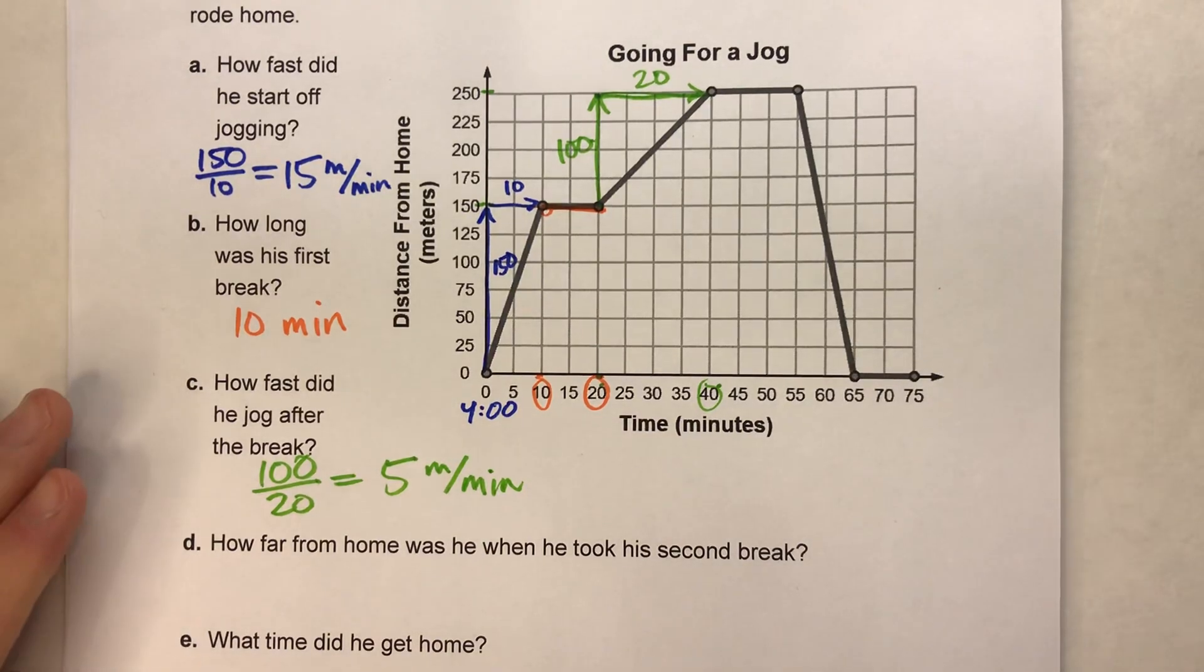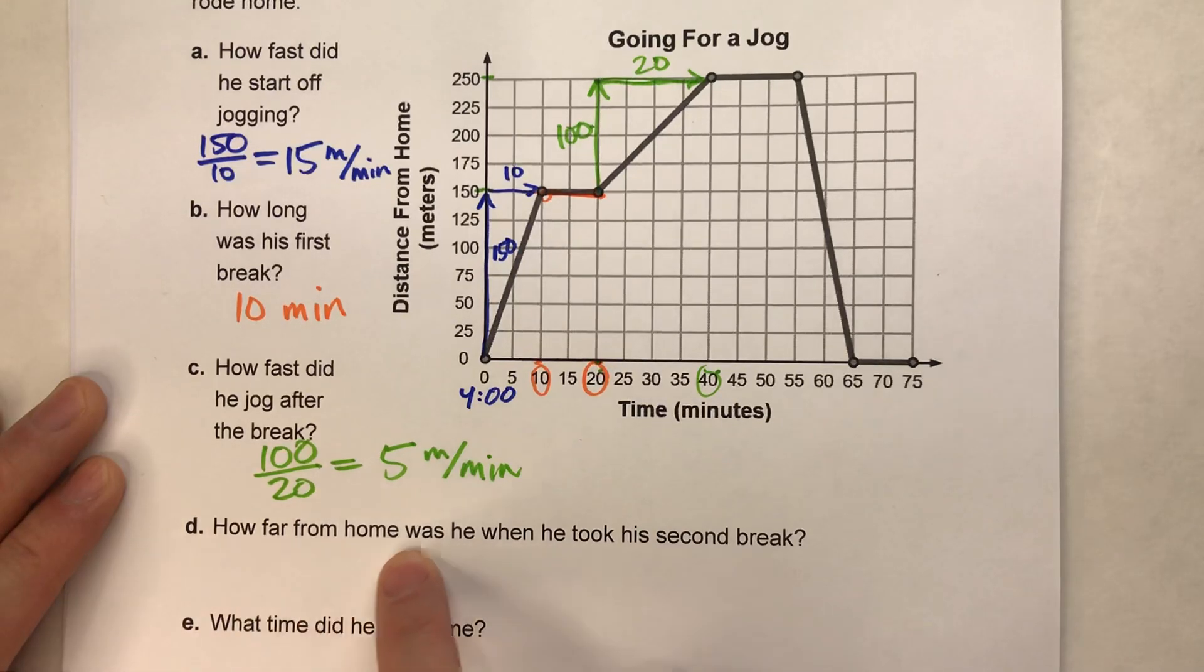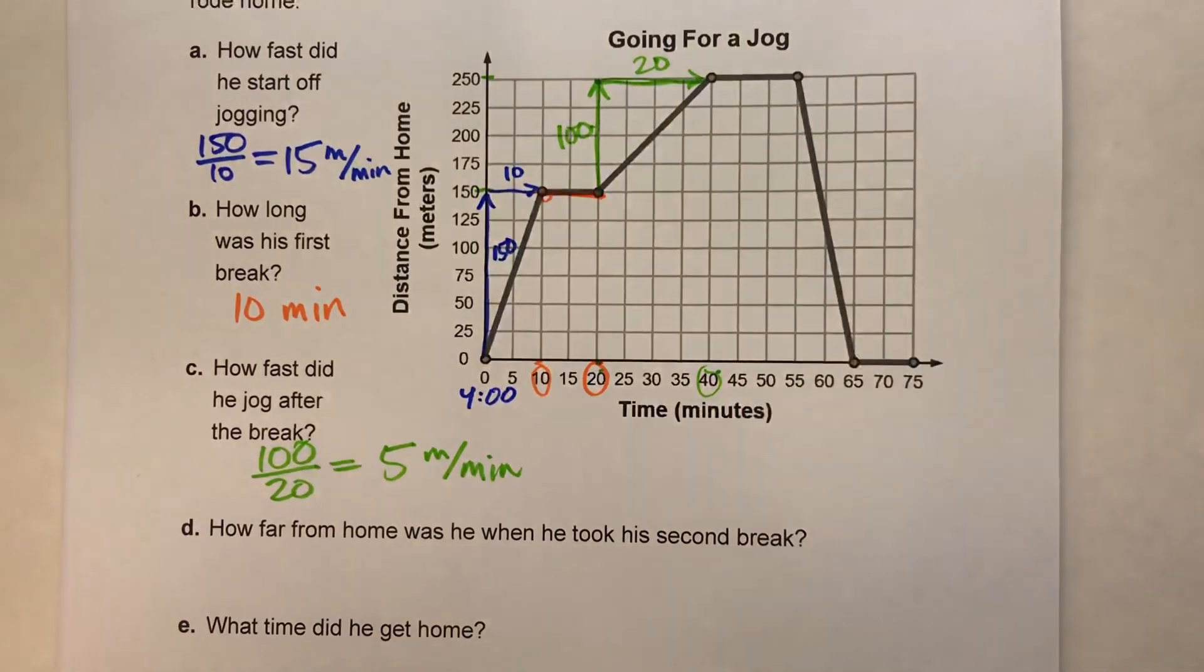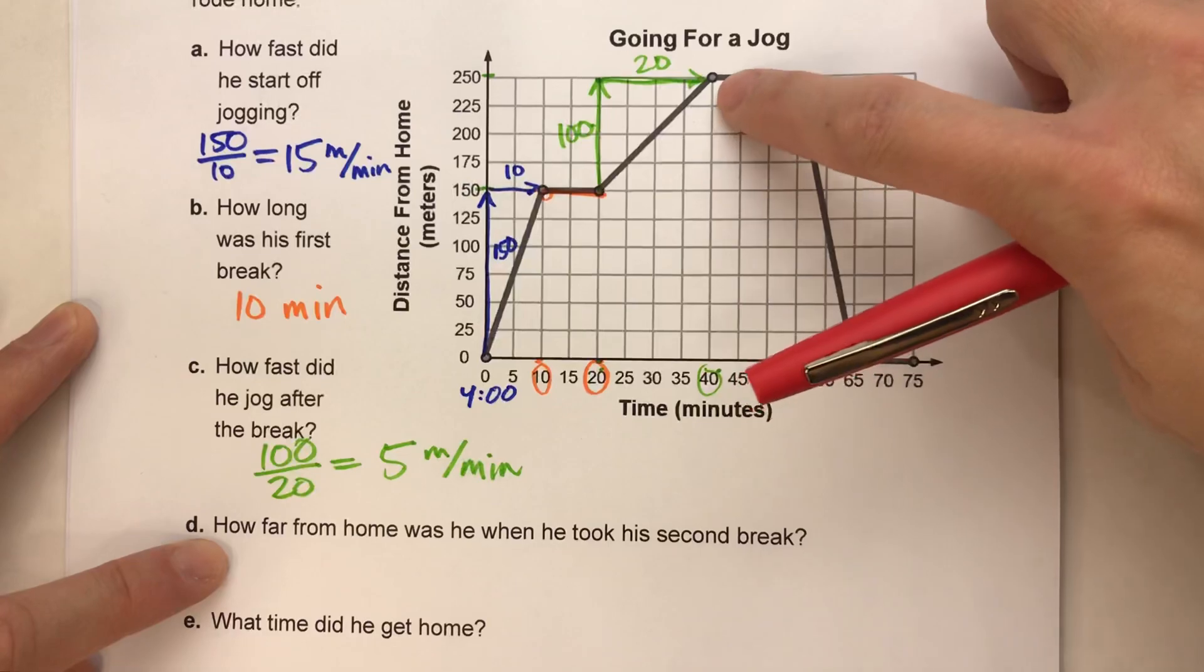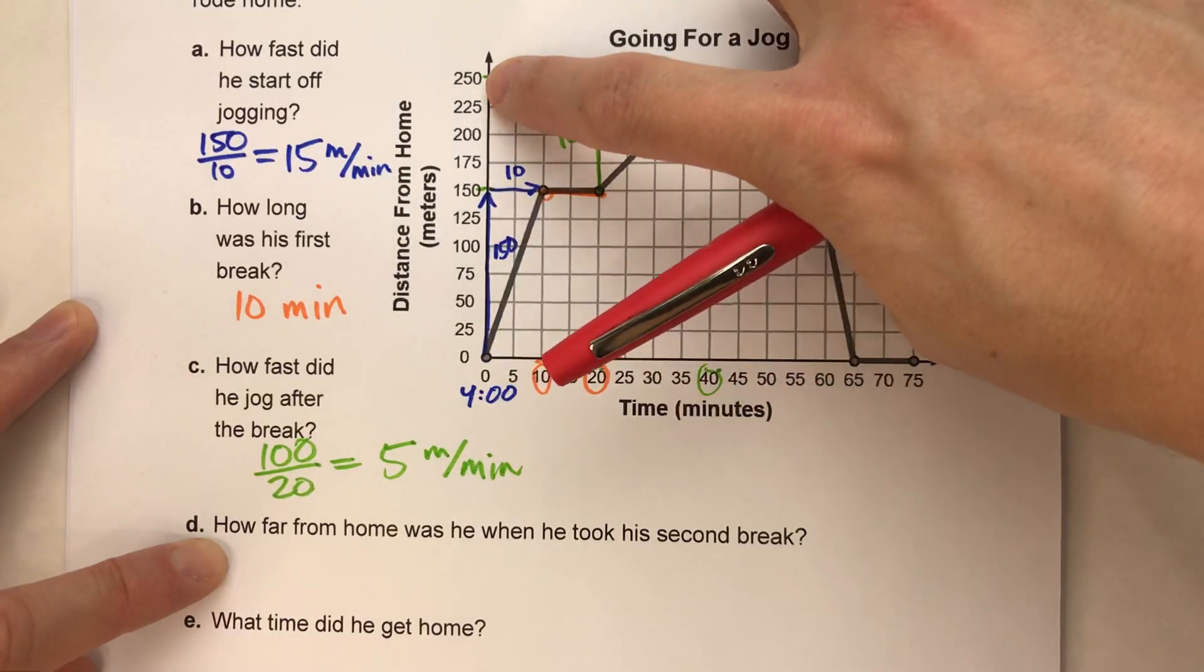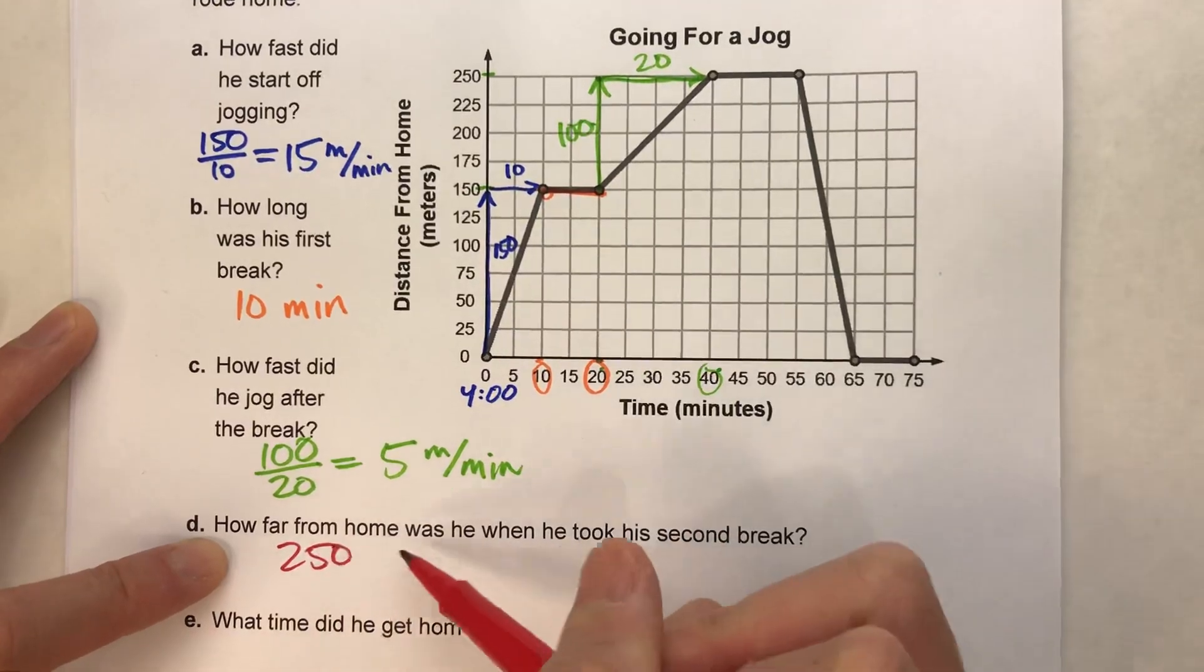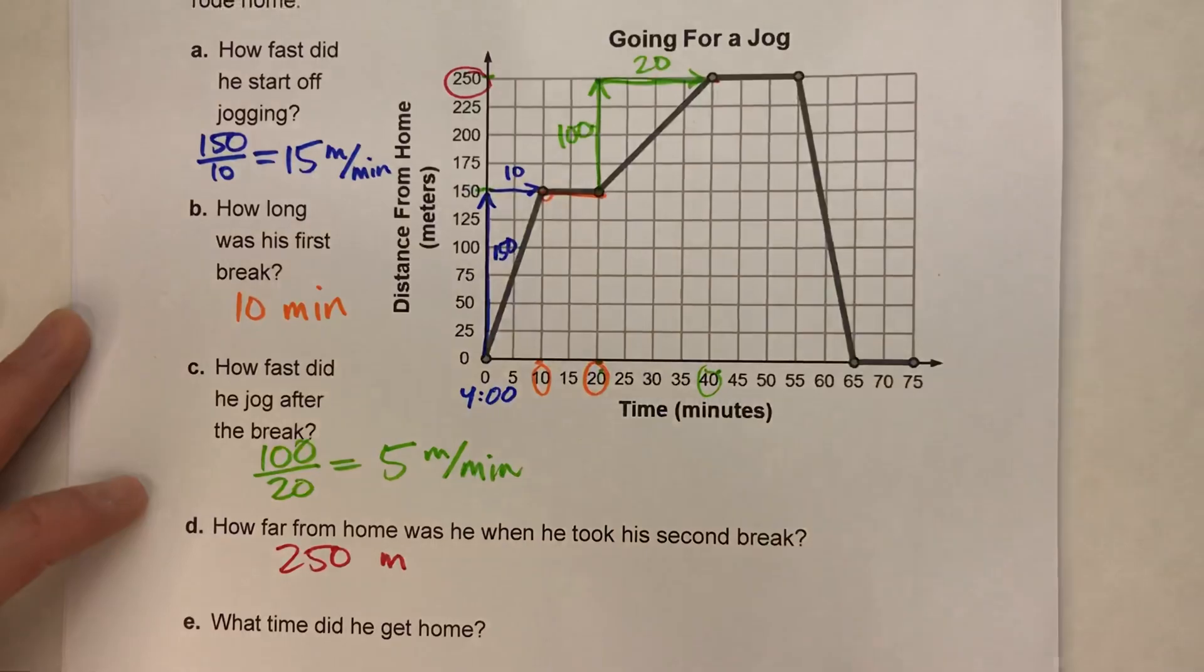Alright. Next question. How far from home was he when he took his second break? Alright. Well, here's the second break right here. How far he was will be on the y-axis over here. So I'll just look over. Look, he's 250 meters from home. It's a pretty easy one. 250 meters from home. Because look, right there.